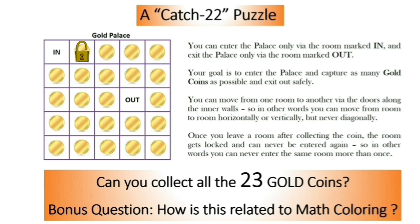In other words, we can move from one room to another room horizontally or vertically but never diagonally. We cannot move from here to here. Once you leave a room after collecting the coin, the room gets locked and you can never enter the same room again. The objective is to collect all the 23 gold coins. You need to enter here, collect all the gold coins and exit out safely. Is it possible? Can you try it out? And the big question is, how is this related to math coloring? That's for you to figure out. I hope you had lots of fun. Thank you so much.